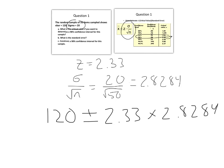Let's do that. The right side of the equation there is 2.33 times 2.8284, which is plus or minus 6.5902.